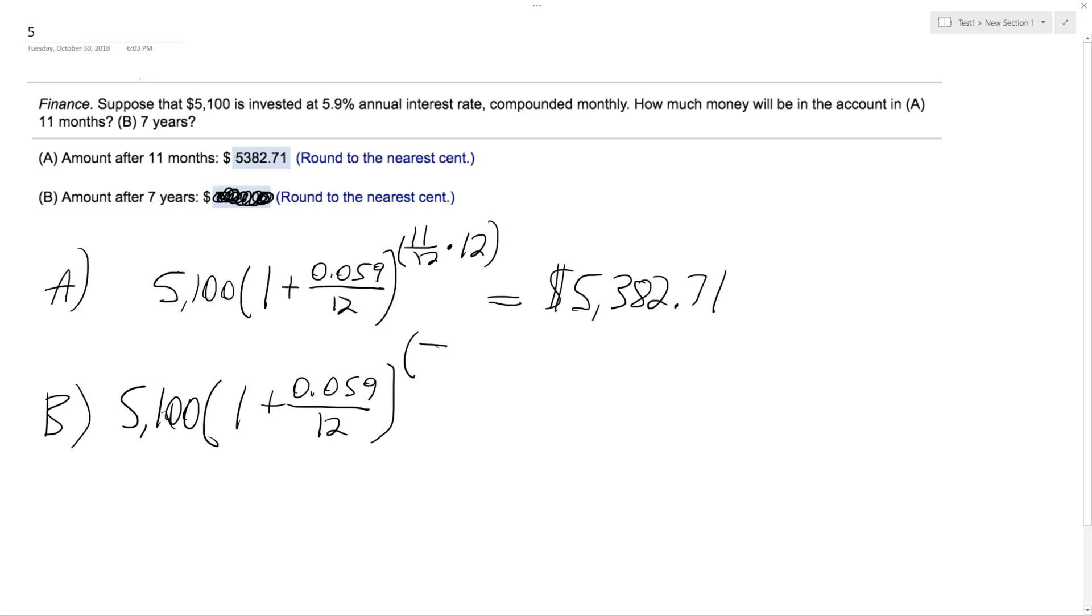we're taking it times seven, because it's seven years, times 12, compounded monthly. And what we end up with approximately is $7,700.06. That's it. I hope this helped you out. Thanks for watching. Have a great day.